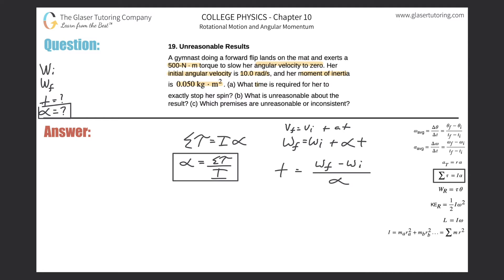So now my new formula becomes: t equals omega f minus omega i all over the sum of the torques divided by the moment of inertia. And voila, here's the formula - you got everything you need, just plug it in.